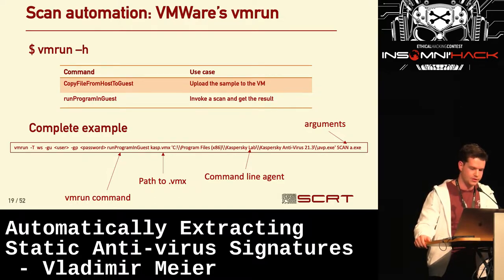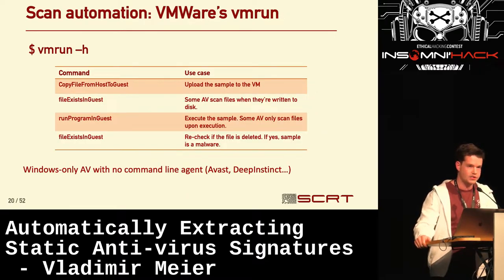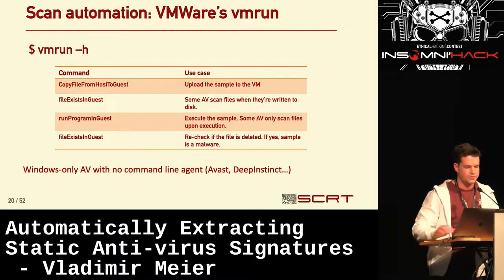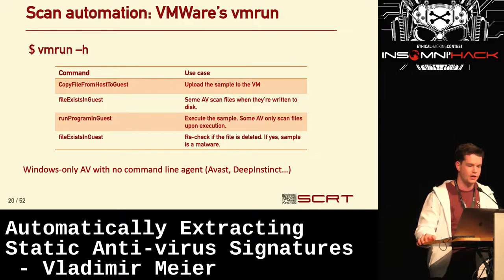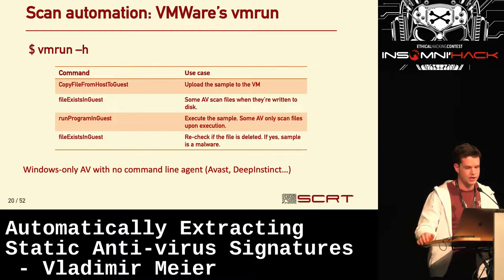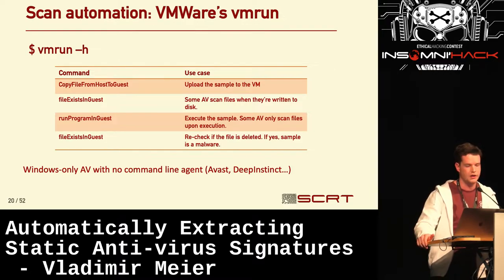Here's a complete example with Kaspersky antivirus. We call the VMRun command, provide the username and password, call run-program-in-guest, and provide the path to the VMX file where Kaspersky trial is installed. VMRun expects the full path to the executable — in Kaspersky's case it's avp.exe, which also expects the keyword scan and a file to scan. When your antivirus doesn't offer a command line interface, you can rely on an oracle: copy the file to the guest, leverage the fact that some antivirus trigger a scan when a file is written to disk, and check whether the file was deleted or quarantined.